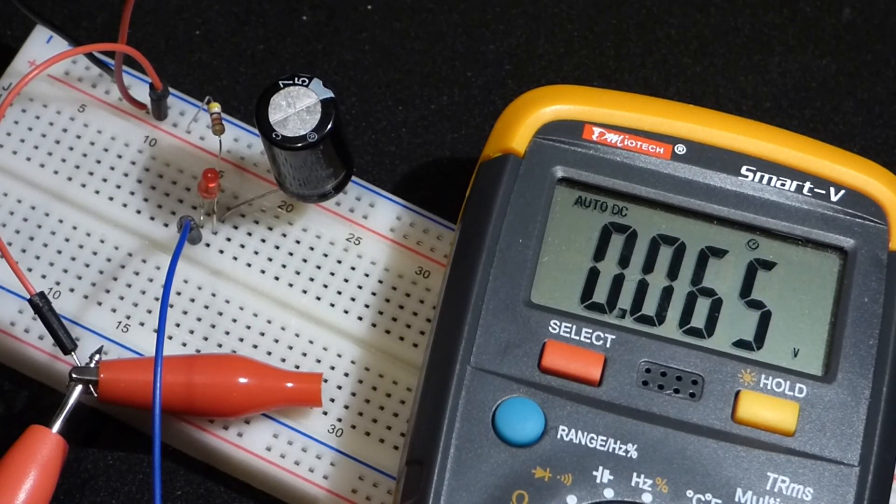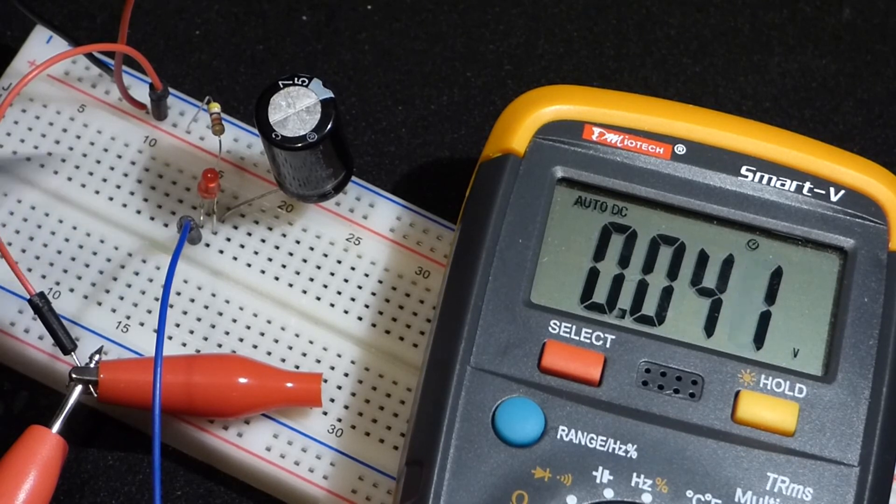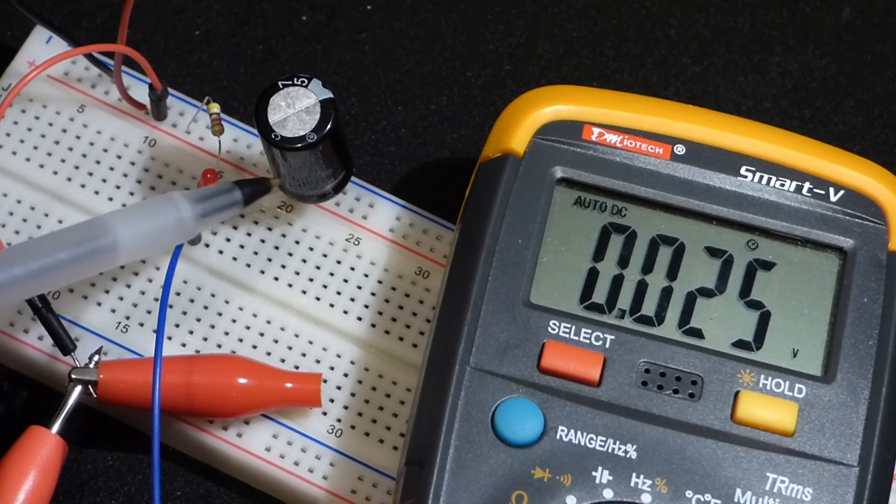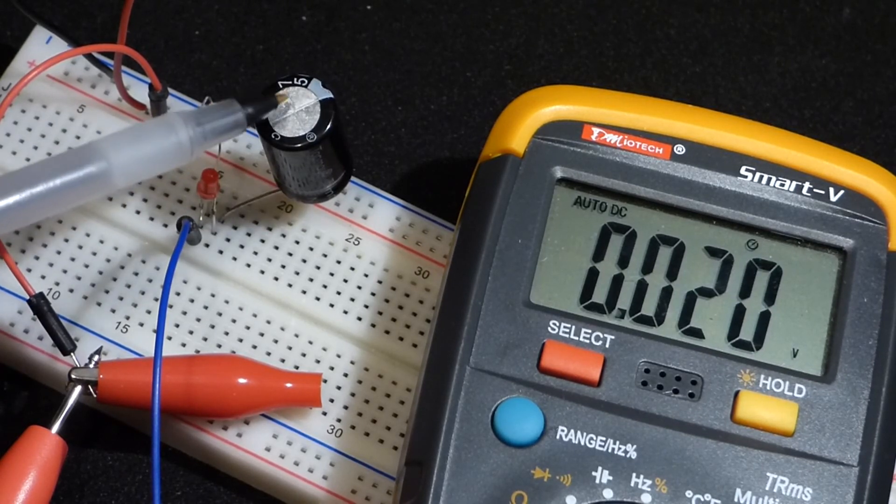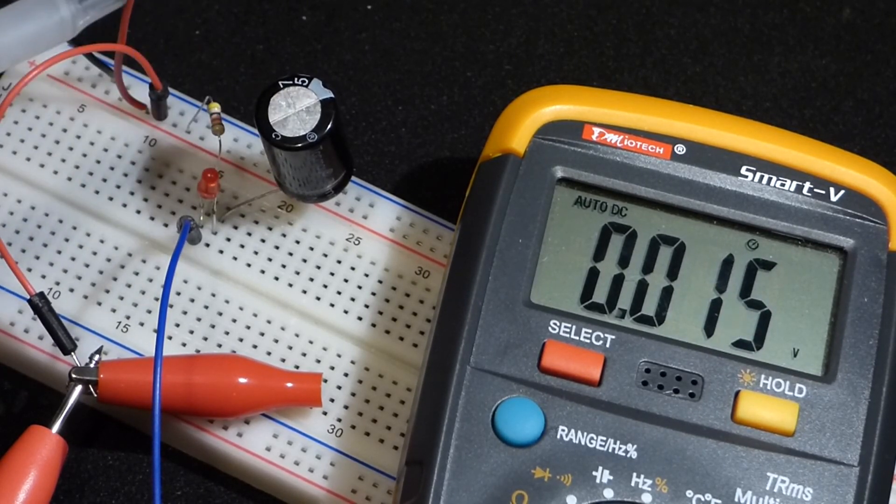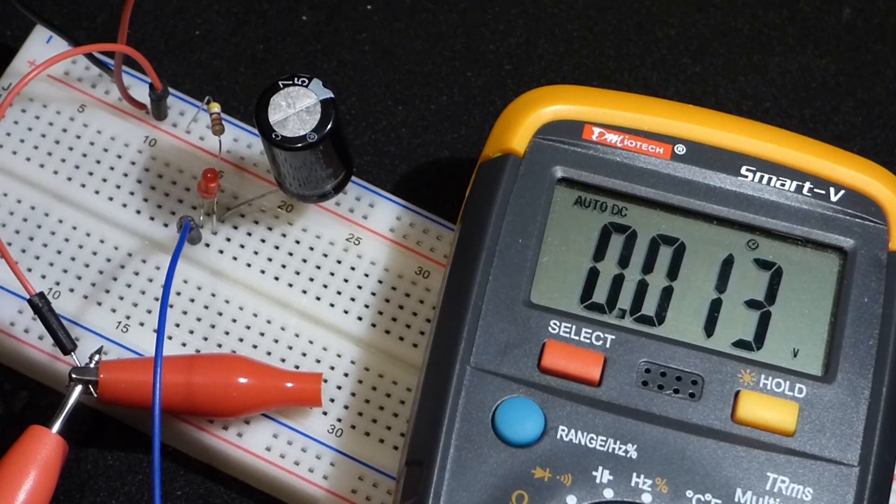There's a voltage building up across the capacitor. This side is becoming more positive, that side is becoming more negative. And again, the LED takes out about a volt and a half of the circuit in that range.